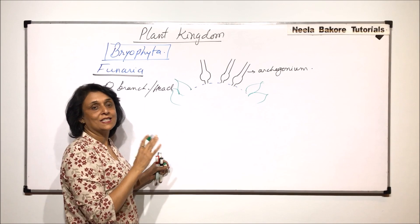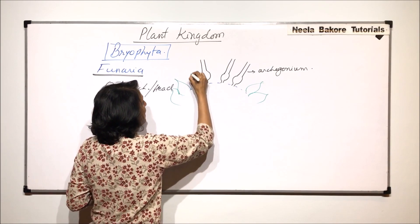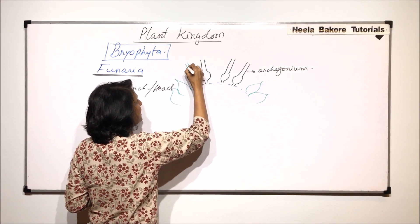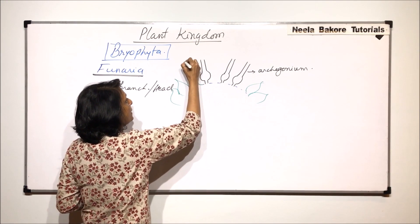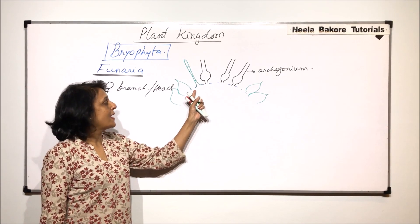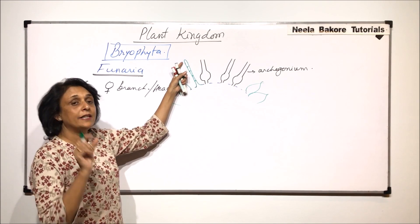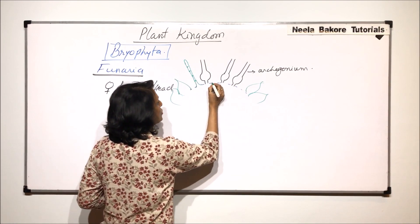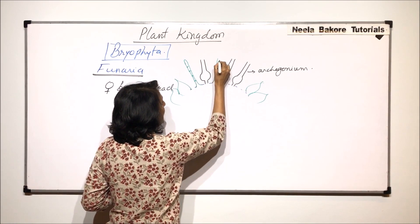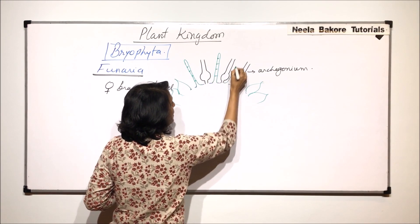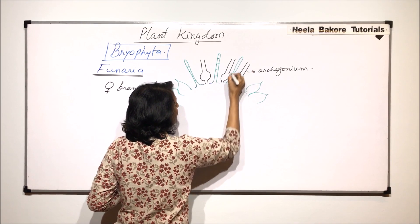So paraphysis are similar with one difference that they are unbranched, multicellular but the tip is not swollen. In case of male head, paraphysis had the tip which was swollen. That means the terminal cell was the swollen cell. So here they are just long hair-like structures which are multicellular with elongated cells.